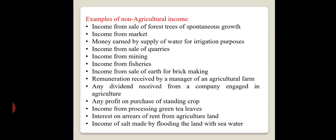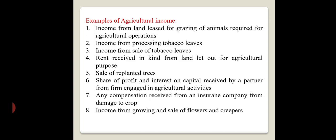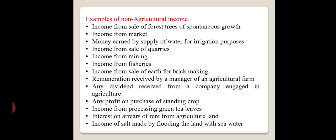Interest on arrears of rent from agricultural land — if you are receiving interest on arrears of rent, that interest is not to be treated as agricultural income. Income from making salt by flooding the land with seawater is also not treated as agricultural income. These are the different examples of agricultural income as well as non-agricultural income.